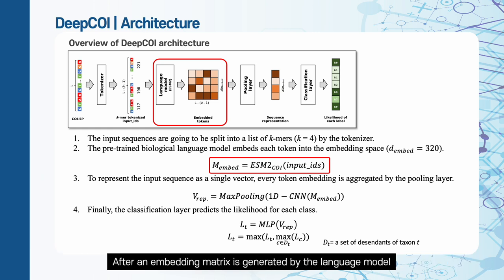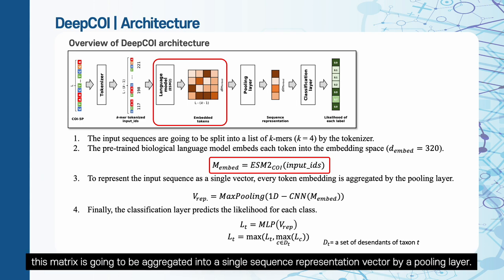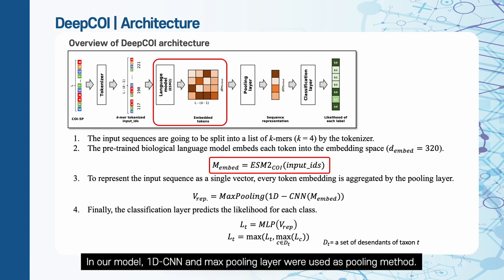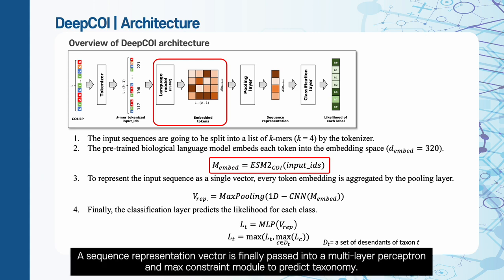After an embedding matrix is generated by the language model, this matrix is going to be aggregated into a single sequence representation vector by a pooling layer. In our model, 1D-CNN and max-pooling layer were used as a pooling method. A sequence representation vector is finally passed into a multilayer perceptron and max-constraint module to predict taxonomy.